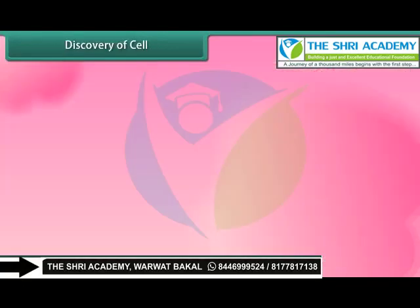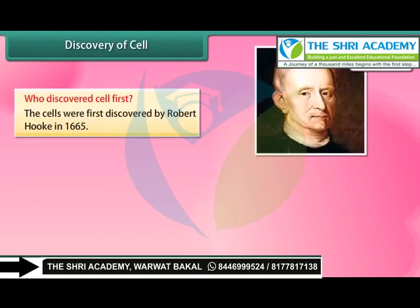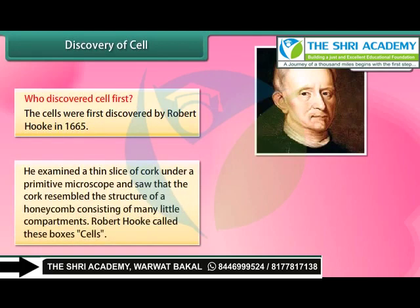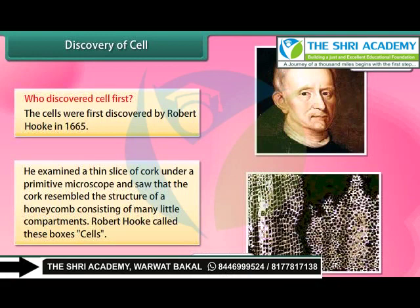Who discovered the cell first? Cells were first discovered by Robert Hooke in 1665. He examined a thin slice of cork under a primitive microscope and saw that the cork resembled the structure of a honeycomb consisting of many little compartments. Robert Hooke called these boxes 'cells'.